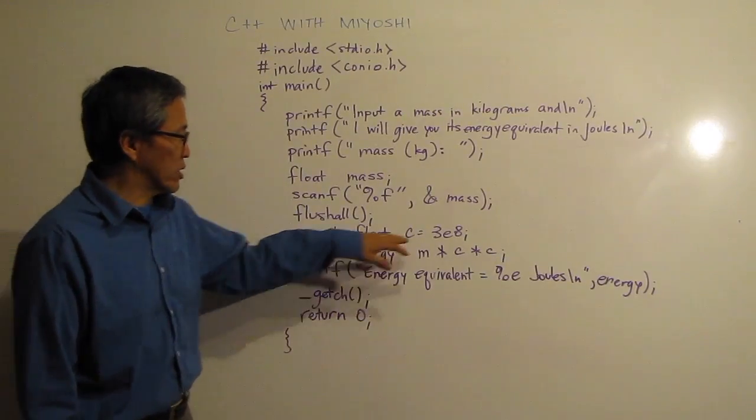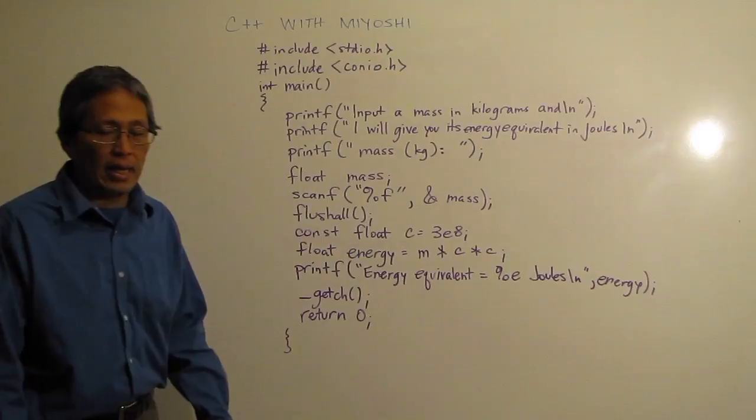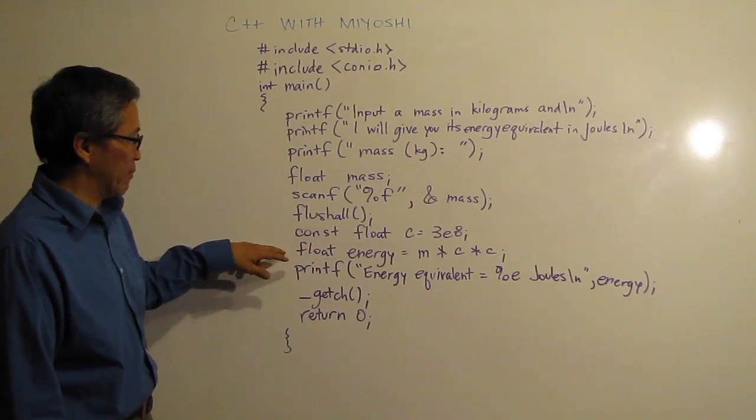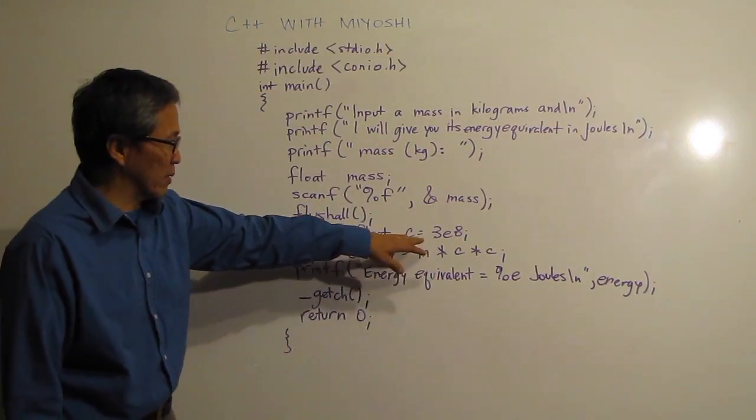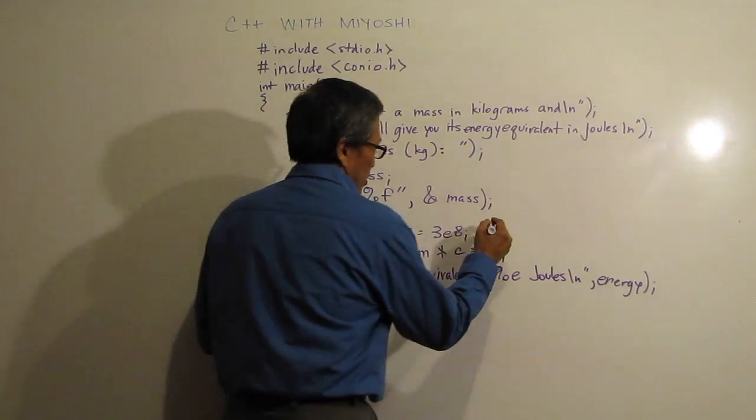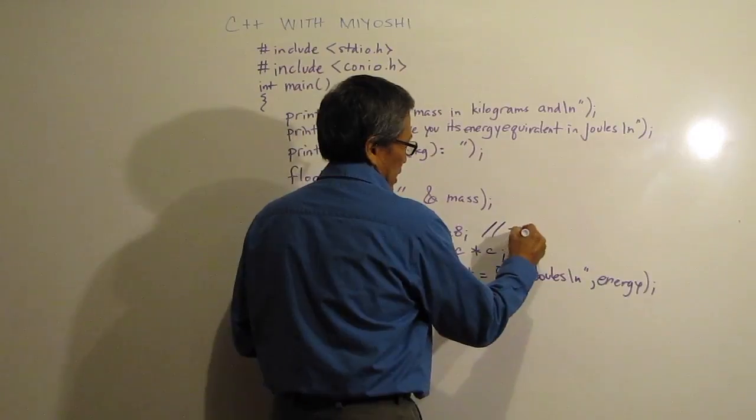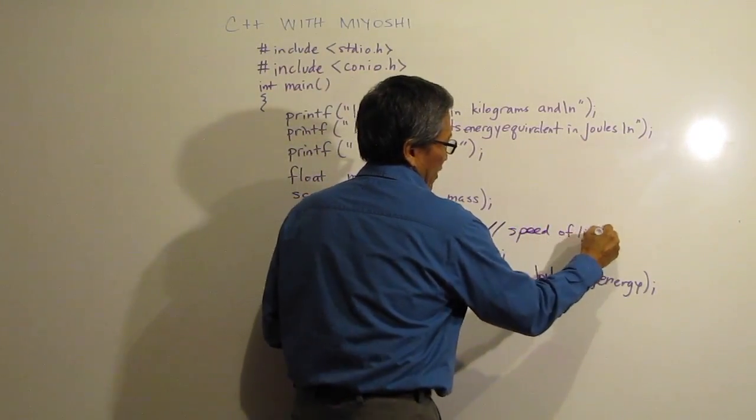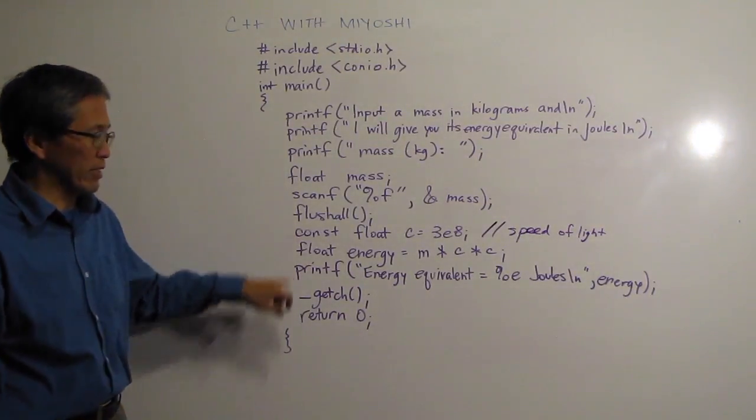I have my constant float C and it's 3 times 10 to the 8th and that's in meters per second, meters per second squared. But we don't have to worry about the units but that is my speed of light, so if you really want to, probably you want to do this speed of light and I can have that as a comment there.